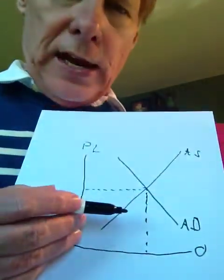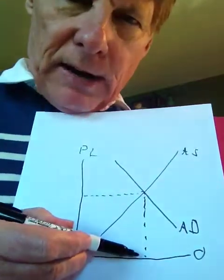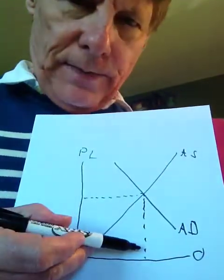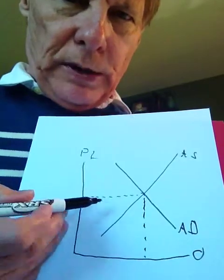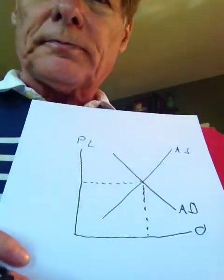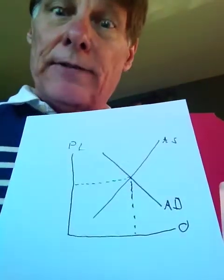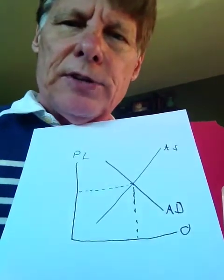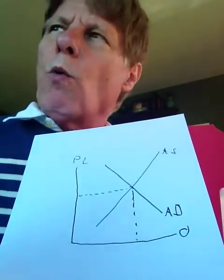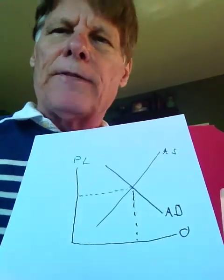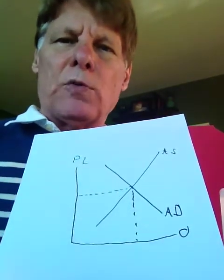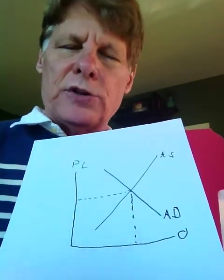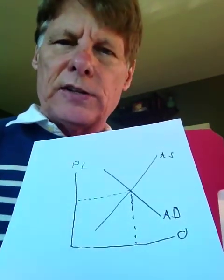Given this aggregate demand curve (AD) and this aggregate supply curve (AS), the equilibrium level of output — real GDP — will be at their intersection, and the equilibrium price level will be there as well. Now here's where the analysis comes in: what would happen if there was a shift in one of these curves? Either an increase or decrease in aggregate demand, or an increase or decrease in aggregate supply.